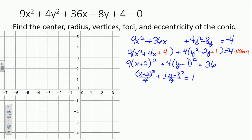The center is negative 2, positive 1. Is this horizontal or vertical? The a squared is now under the y minus 1 term, so it's vertical. How much do we go up and down from the center? A is 3, B is 2. So we go up 3 and down 3, and then right and left 2.